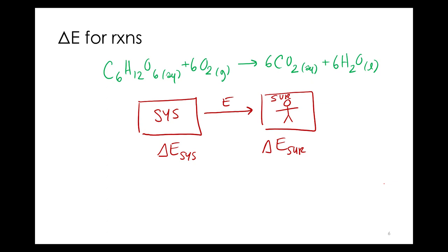Why are we doing this reaction? To get energy. If we're gaining energy, is our change in energy positive or negative? Positive. So we're gaining energy from this reaction, so it's positive for the surroundings. So the change in energy of the surroundings is positive. What does that mean for the system? It has to be negative. If this reaction is losing 50 joules, we're gaining 50 joules.